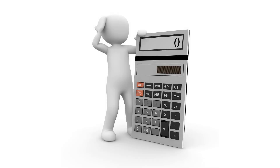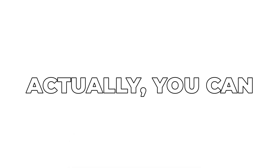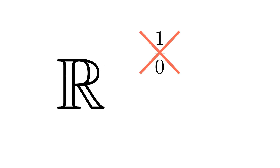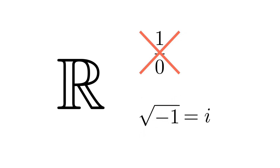Calculators, computers, and teachers throughout your life have told you that you can't divide by zero. But I'm here to tell you that you can. It's true. In the real numbers, division by zero isn't defined. But neither is taking the square root of negative one, and yet mathematicians found a way to do it.